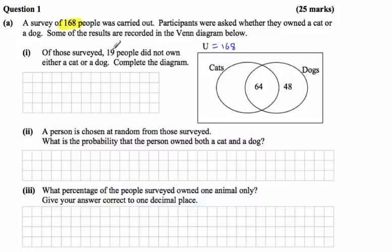Okay, then we're looking at this 19 people here did not own a cat or a dog, so that's 19 out there. So to complete the diagram, we need to know the people in here who own cats only. Well, all these numbers should add up to 168, so if we add 19,